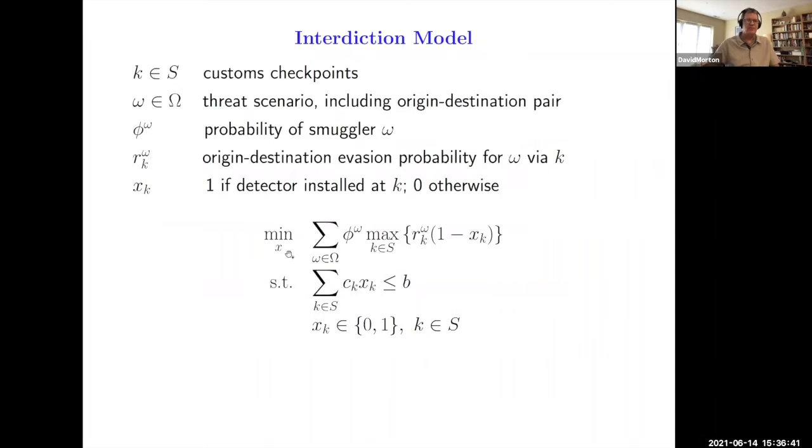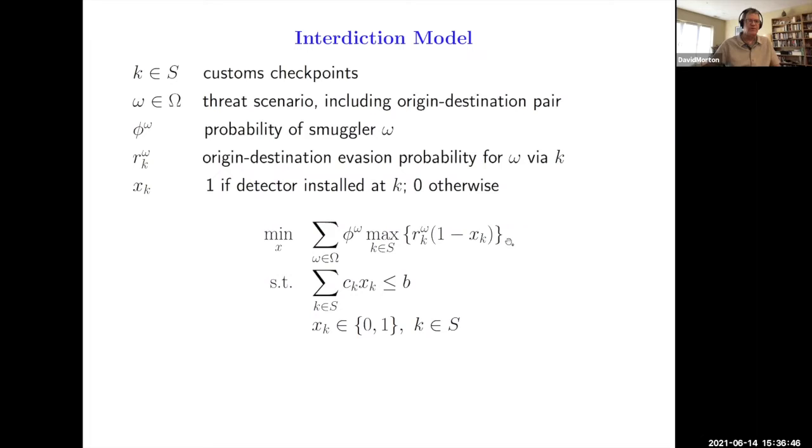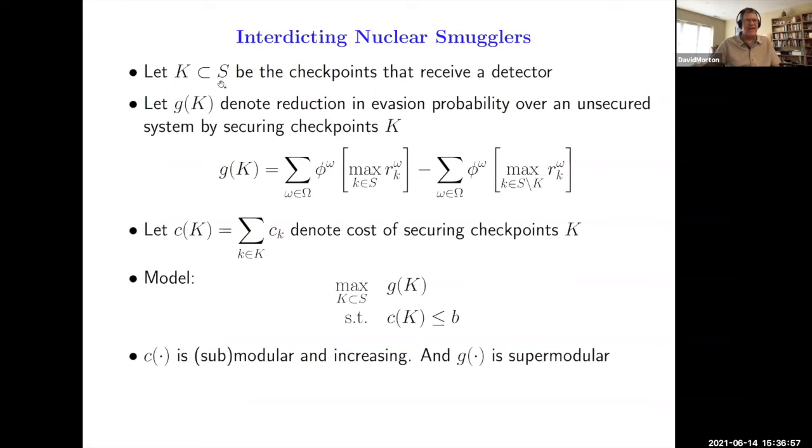Coming back to the nuclear smugglers, this is the model that I already showed you, where we're trying to minimize the overall evasion probability for the smuggler. Can we cast that in the form of a gain function? S, that's all the border locations. K is the subset that receive a detector. And our gain function we could think of as this: What's the reduction in the evasion probability relative to a completely unsecured system? Our unsecured system, the evader gets to pick the border crossing with the maximum evasion probability. That's the overall probability of evasion of an unsecured system. And then we secure it by taking a subset K of the border crossings away from the evader. That's the reduction in evasion probability. And it turns out that you can prove that this is a supermodular function.